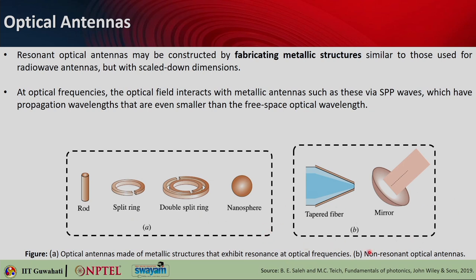Optical nano antennas can also be non-resonant. In that case, you can think of metal-coated tapered optical fiber tips used for near-field microscopy, and paraboloidal mirrors used in telescopes. The dimensions of these optical antennas are typically far greater than the optical wavelength, so they are similar to microwave antennas — while the resonant sub-wavelength ones are analogous to the radio wave antennas seen previously.